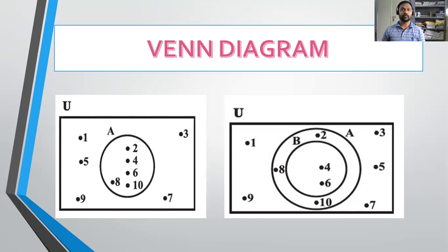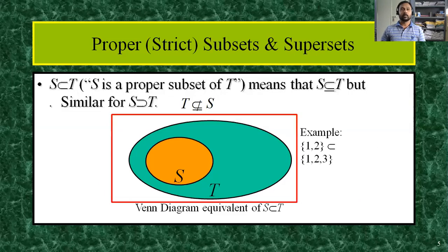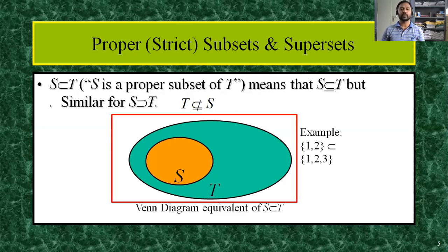A is a subset of U only. Now, for proper subsets or supersets: S is a subset of T means S is a subset of T but S is not equal to T. So here inside the universal set, S and T are given. S lies completely inside T because T is the superset. In such a way, we can represent sets using Venn diagrams.